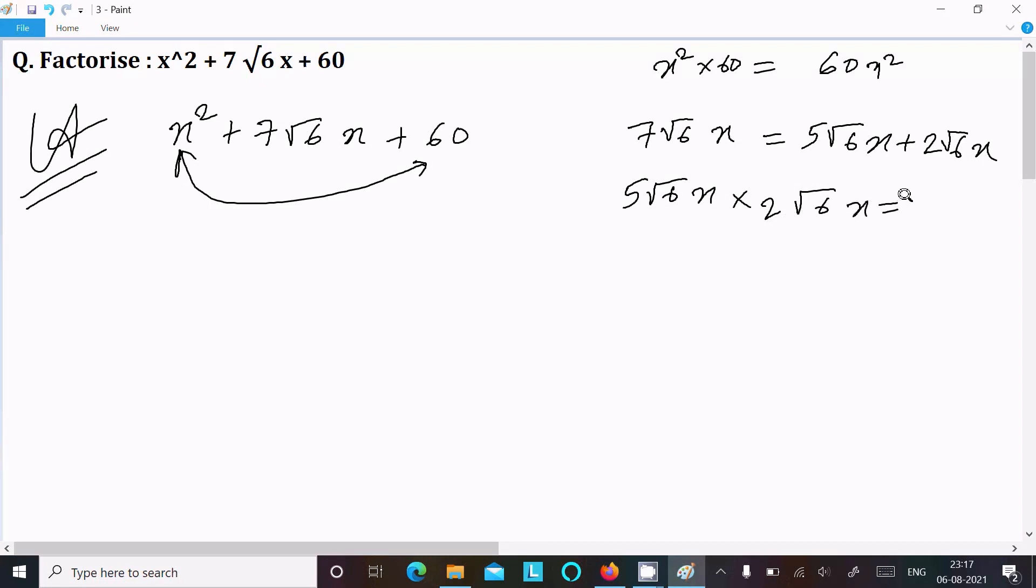So if you multiply this one, 5×2 is 10, √6×√6 is 6, so that's 60x². Now 60x² and 60x² both are same, so we can take this combination.